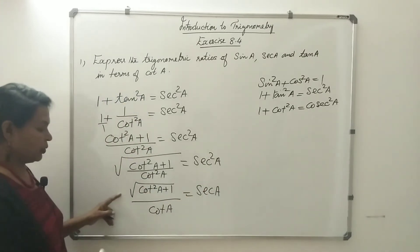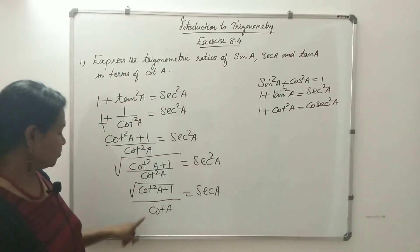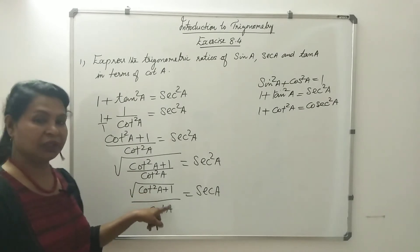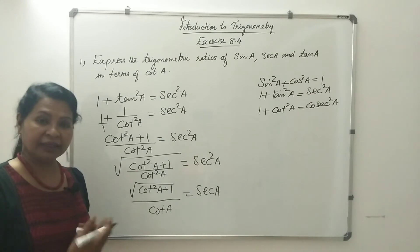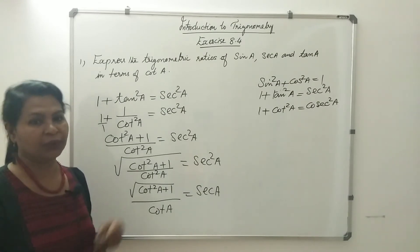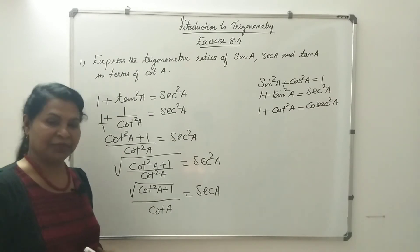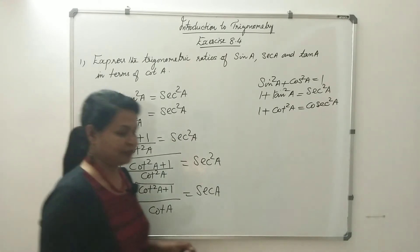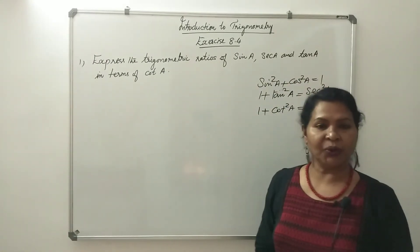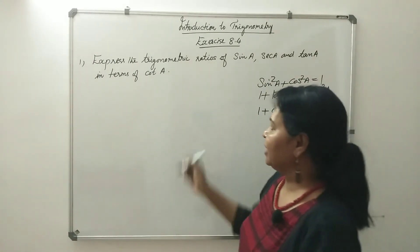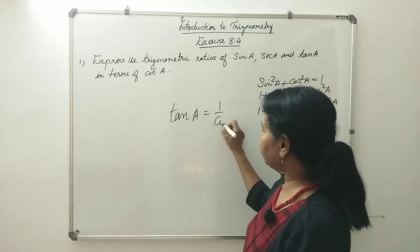So secA is the square root of (cot²A plus 1) divided by cotA. We call this the expression for secA in terms of cotA. Tan is in terms of cot — tan is in the inverse of cot. So tanA equals 1 divided by cotA.